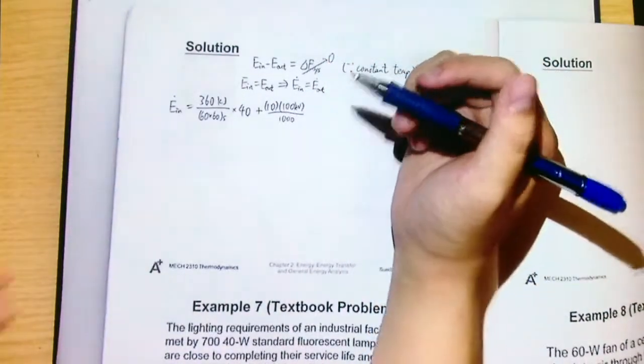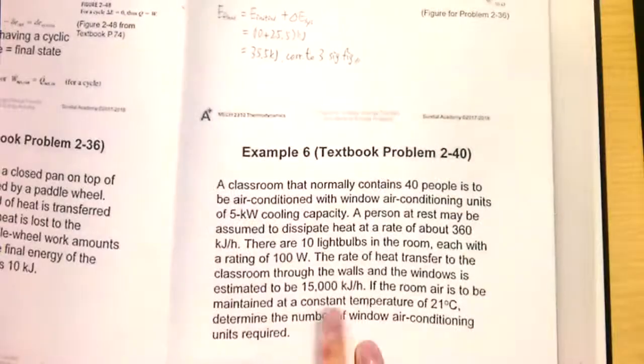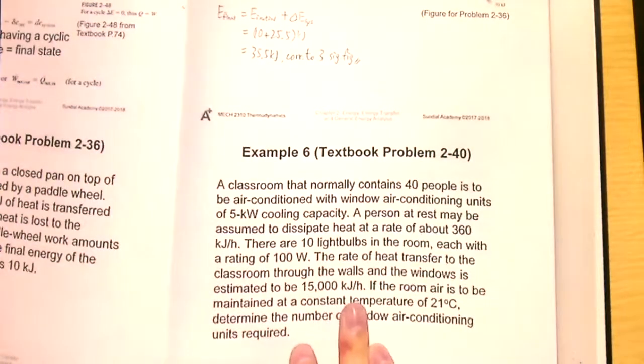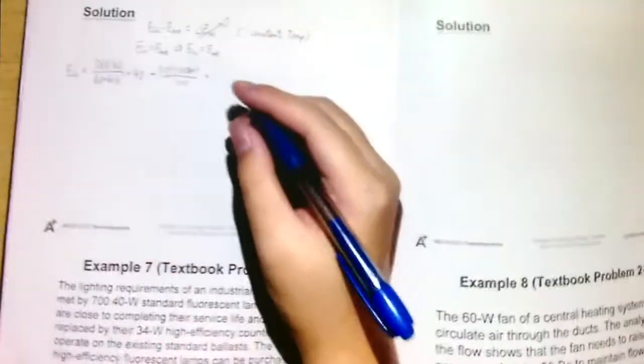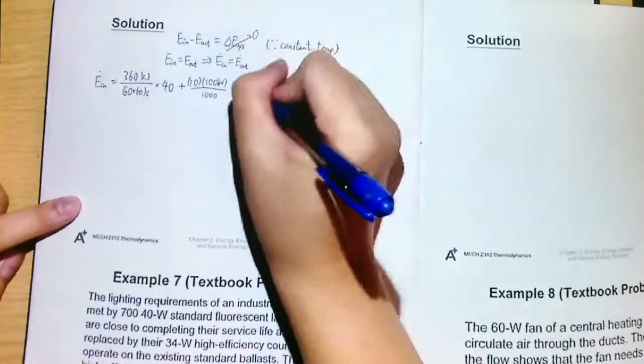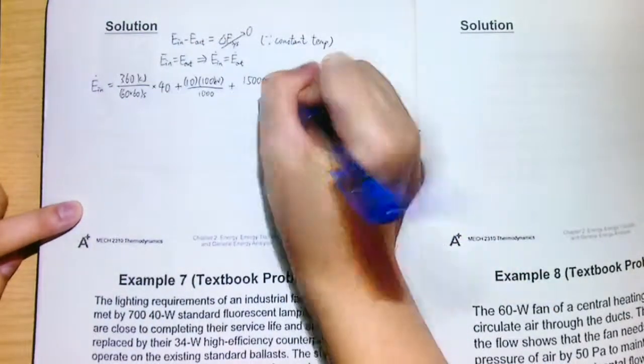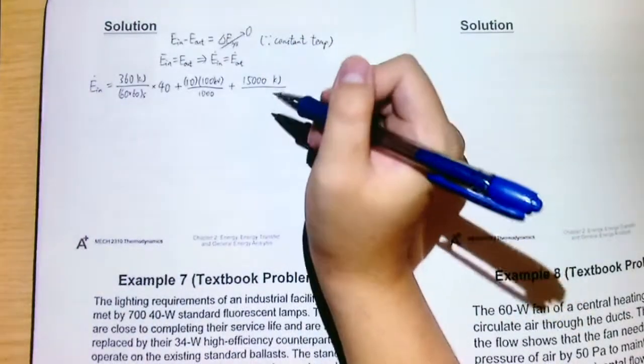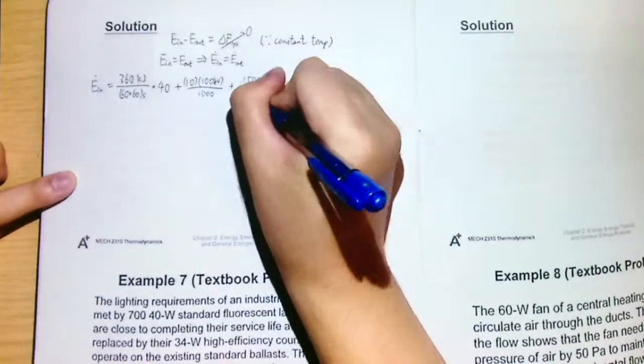One more thing: we also have heat transfer through the walls as well as the windows. It is estimated to be this value—again it is per hour, but we need to convert it to kilowatt, so we need to change it to per second. That is 15,000 kilojoule divided by 60 times 60 seconds.